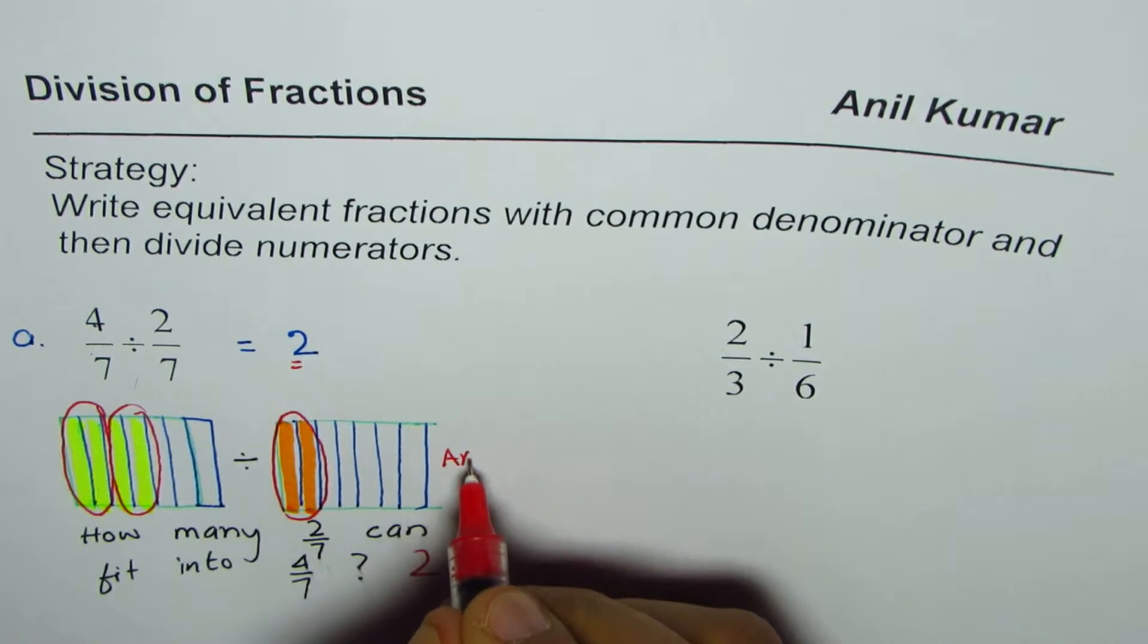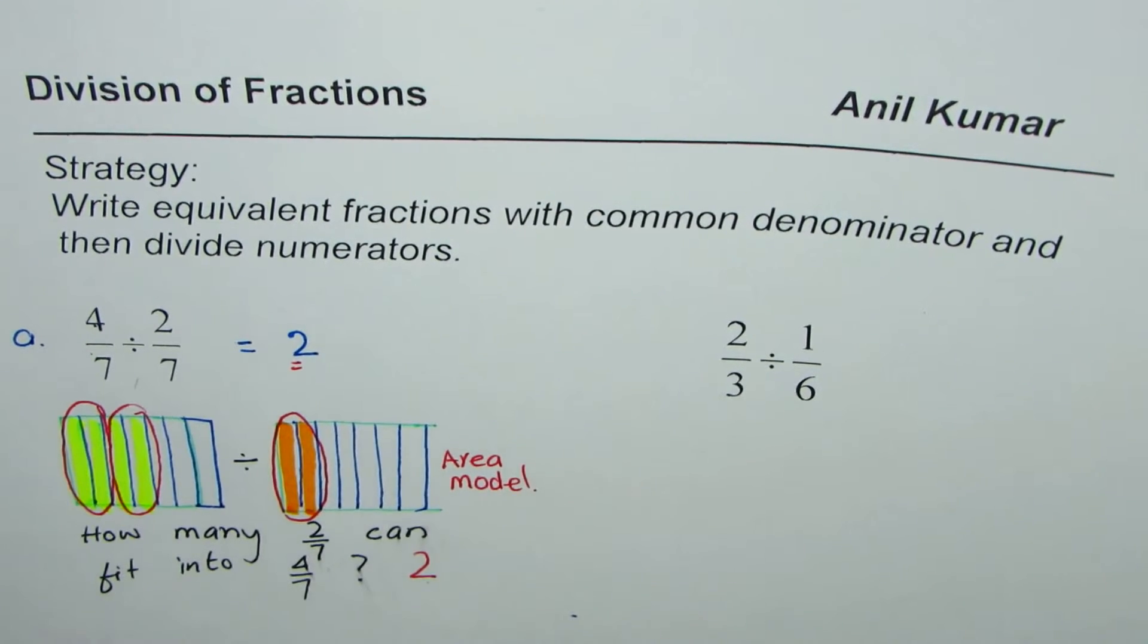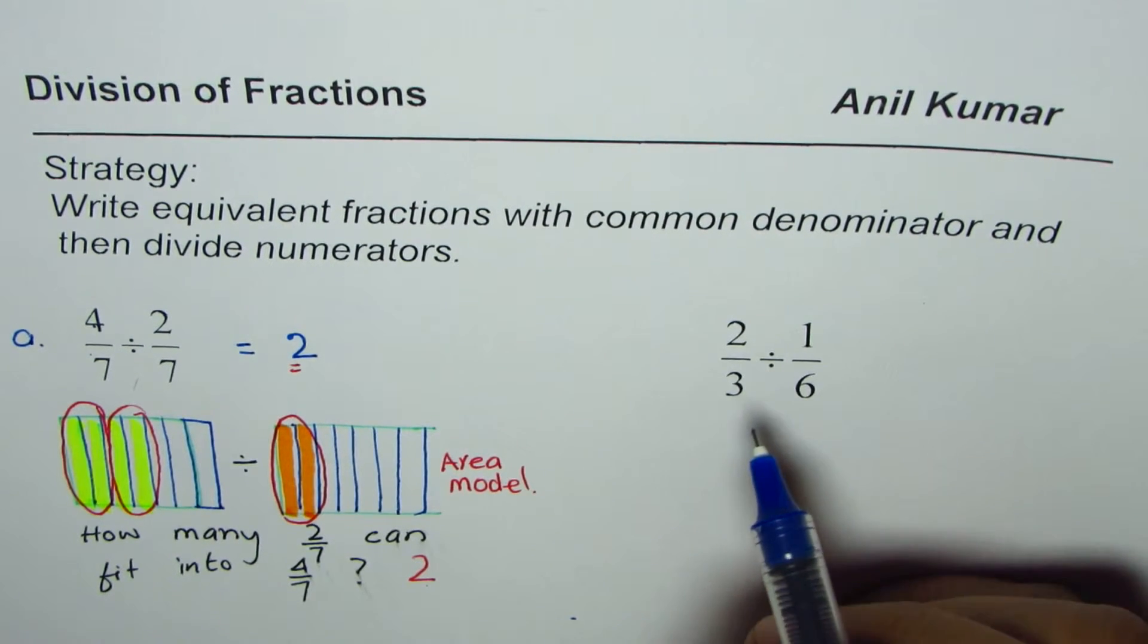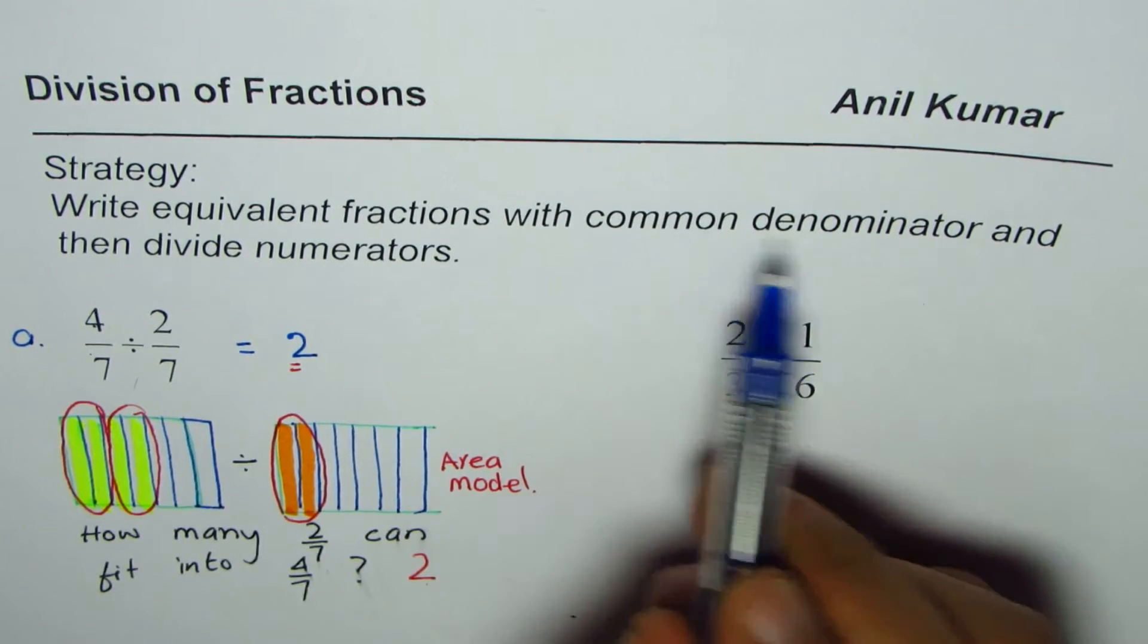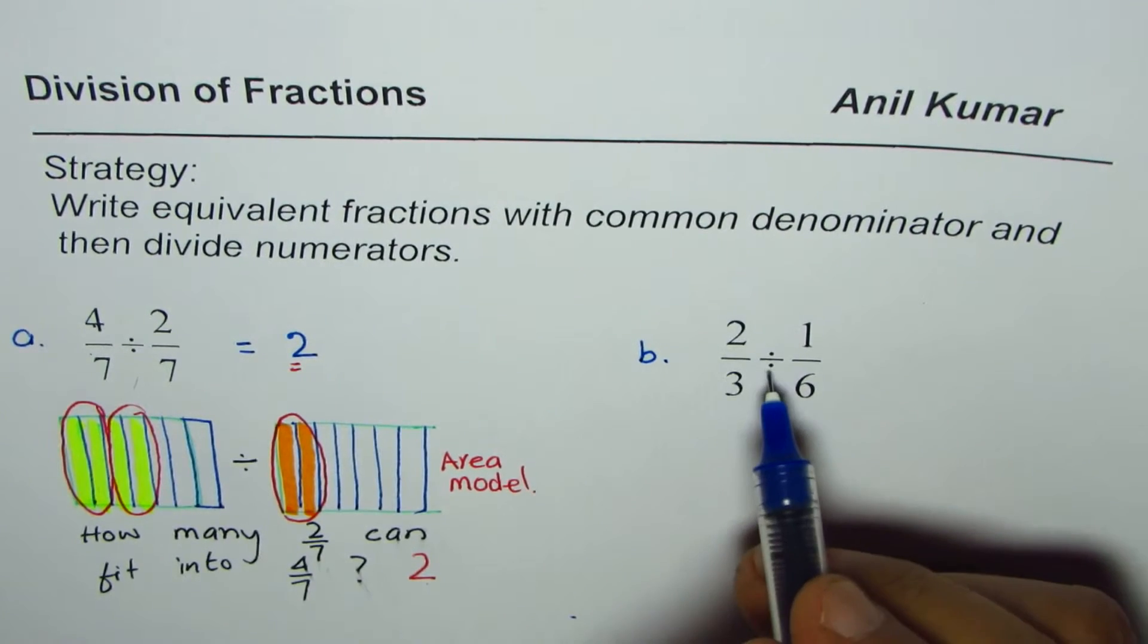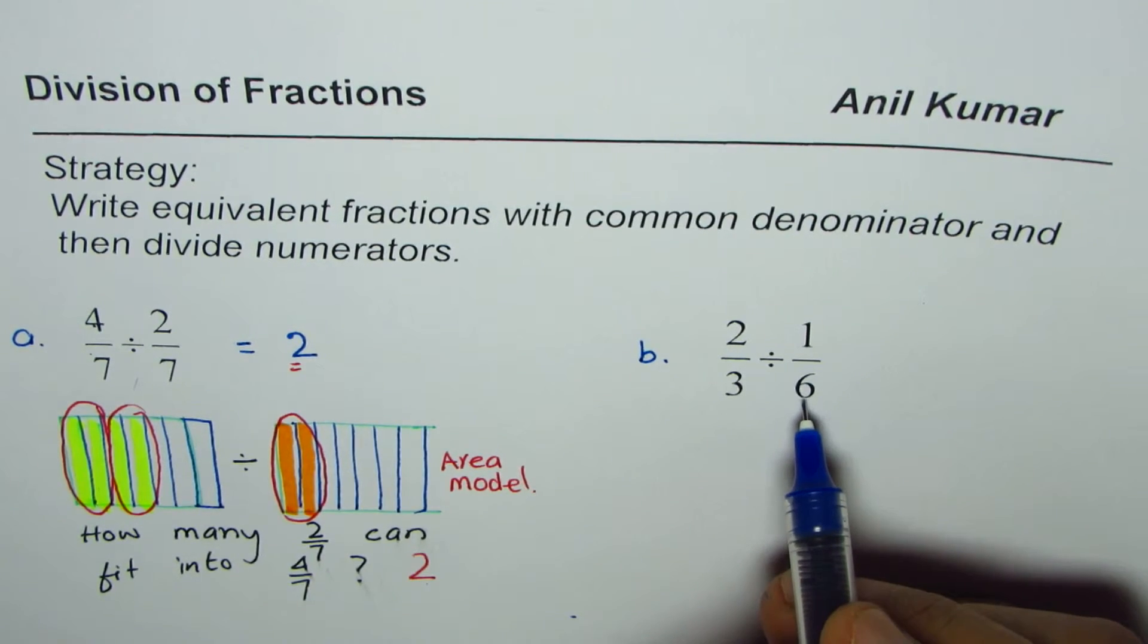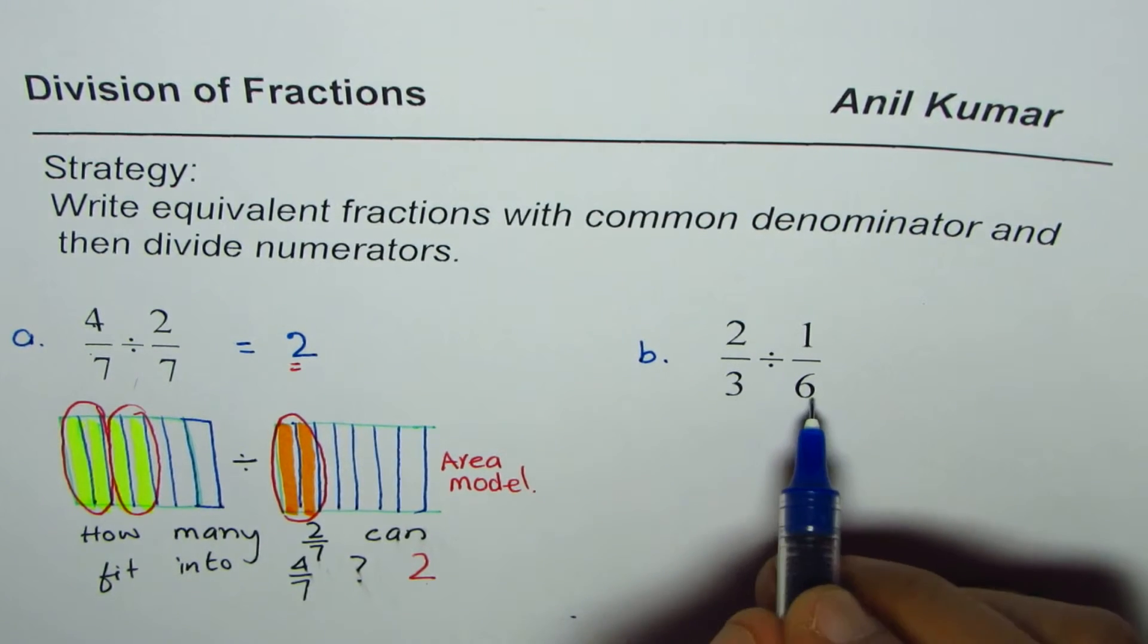Okay, so we have learned two strategies here: one working with common denominators and how it relates to area model. Now let's use the second one to solve or divide fractions using common denominator. Now in question number b, 2 over 3 divided by 1 over 6, denominators are not the same. Lowest common denominator can be 6.